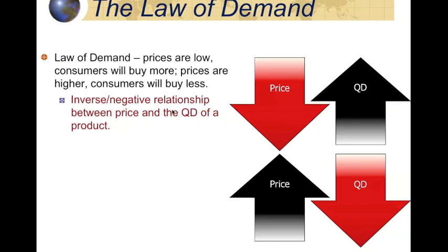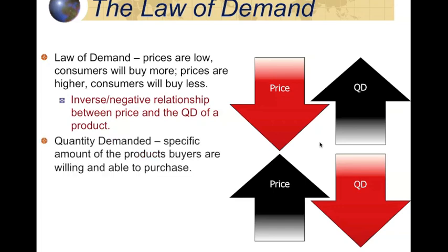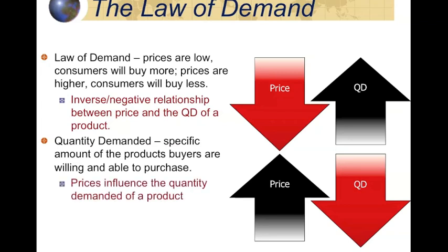In math, we call it a negative relationship. The relationship is between price — that is the price of a product — and the quantity demanded, that is how much we will buy of a product. The quantity demanded of a product refers specifically to the actual amount that a consumer will buy at various price points. In a market system, prices have a major influence on the amount of stuff that we will buy at any given time.